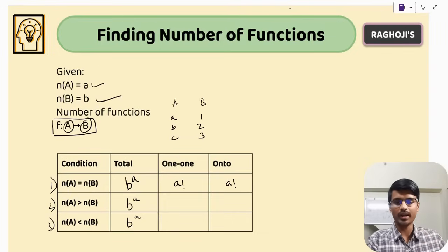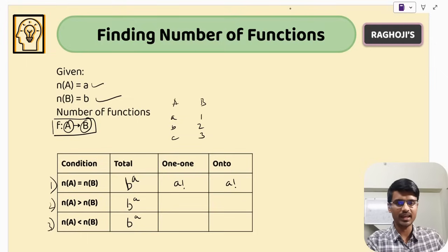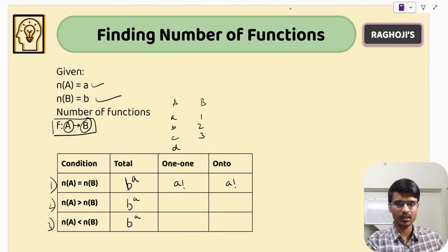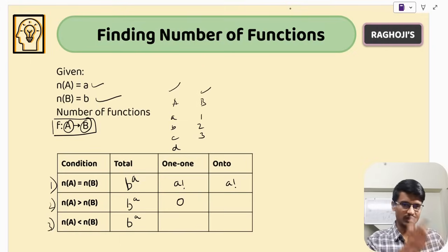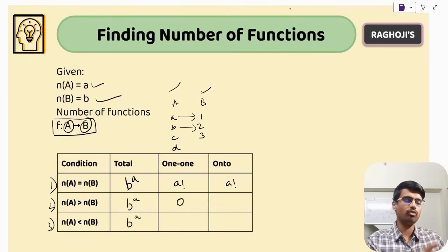Case 2: when |A| > |B|. If you have four elements in set A and only three in set B, can every element of A map to a unique element of B? It is not possible, so the number of one-one functions is 0. Onto functions are possible here, but there is no general formula — it depends case by case.